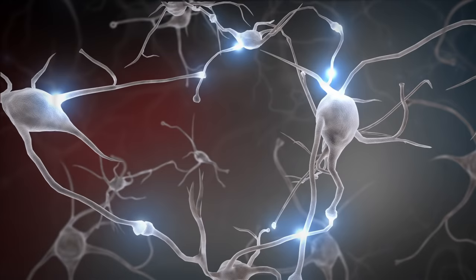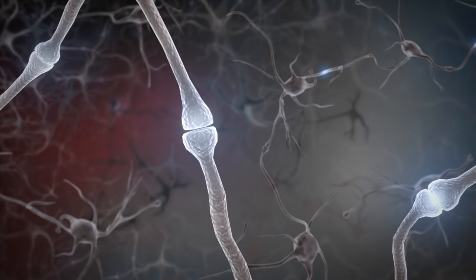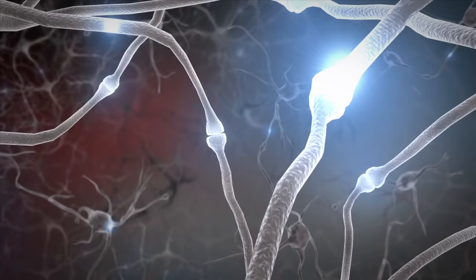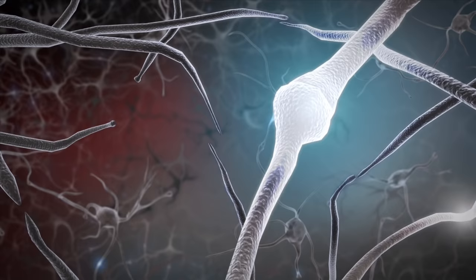Circuits and connections proliferate at a rapid pace and are reinforced through repeated use. Our experiences and environment dictate which circuits and connections get more use. Connections that are used more grow stronger and more permanent, meanwhile connections that are used less fade away through a normal process called pruning.